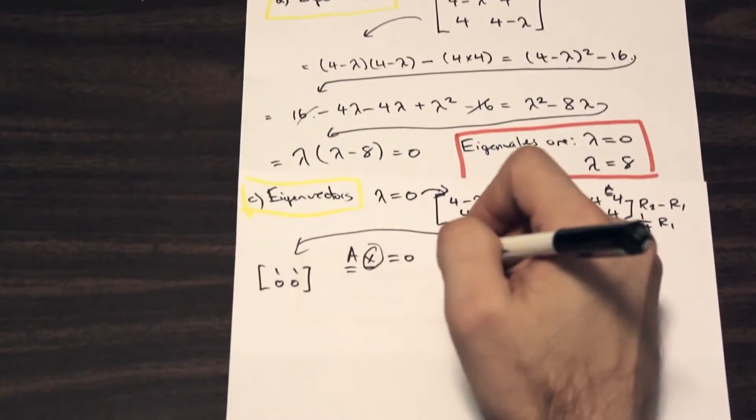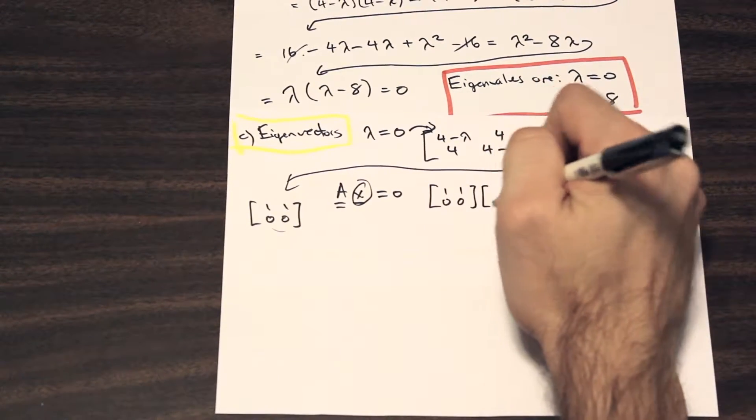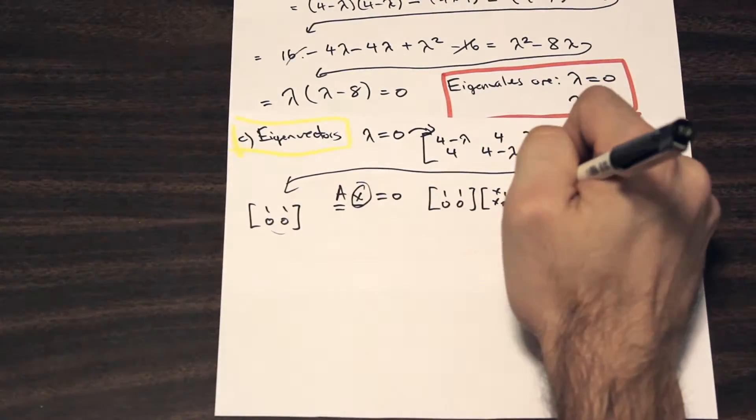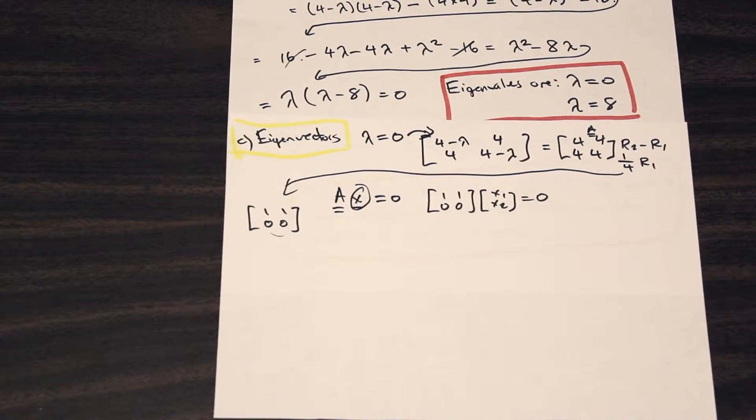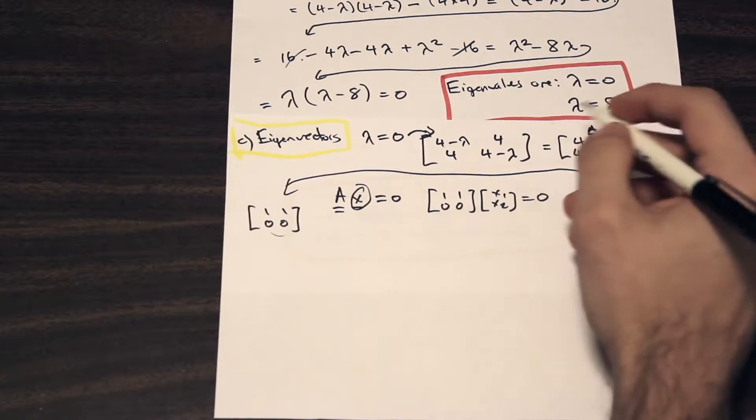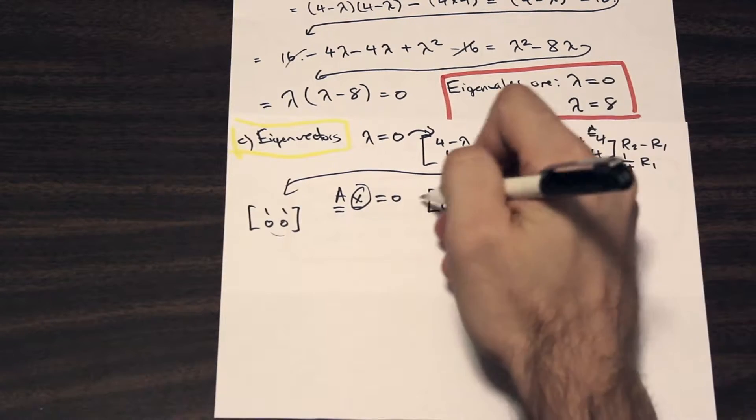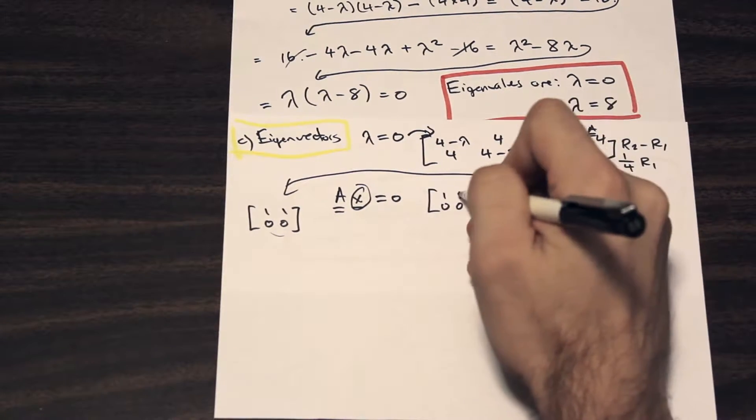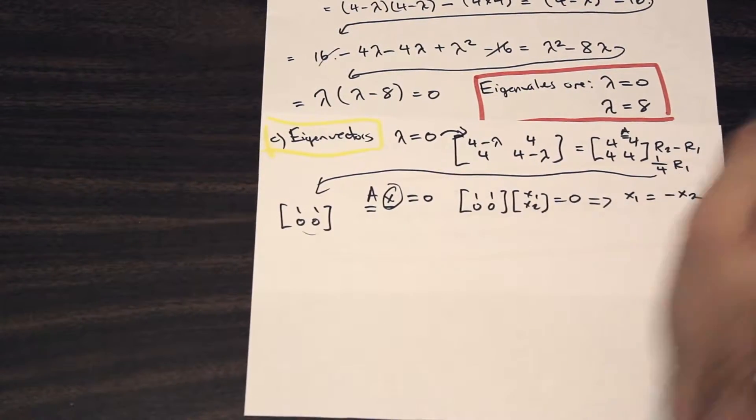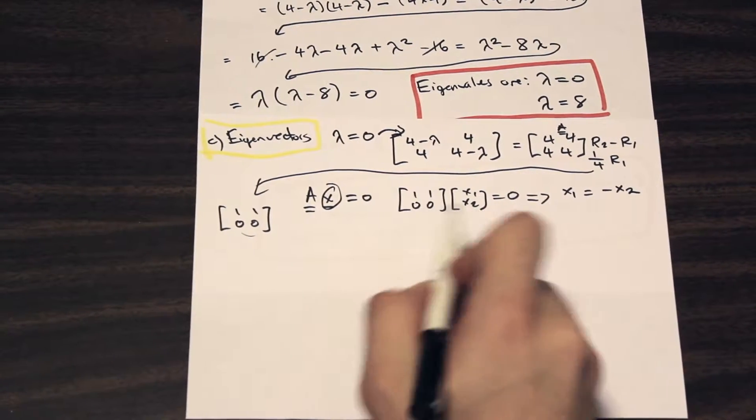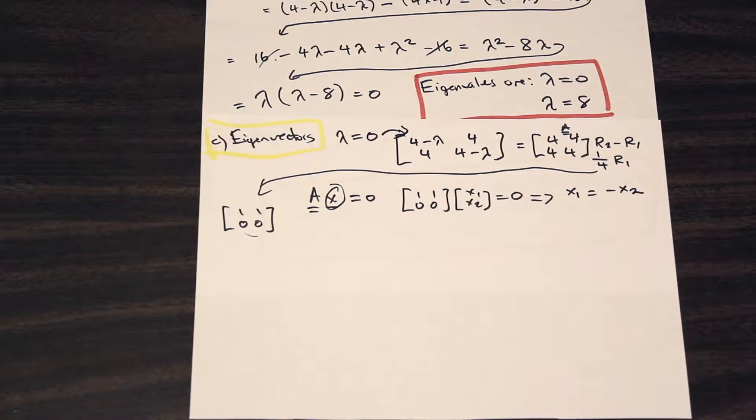So let's go ahead and rewrite our matrix here. So we have 1, 1, 0, 0, and that's going to be times X1, X2, and that is equal to 0. So how do we solve this? Well, let's go ahead and write out the equations for this system. So we have X1, and we have nothing on the right side of the equation. So this is our X2. Let's move it to the other side, negative X2. And in this one on the bottom, as you can see, we have zeros here. So this is 0 equals 0. So you have X1 equals negative X2.